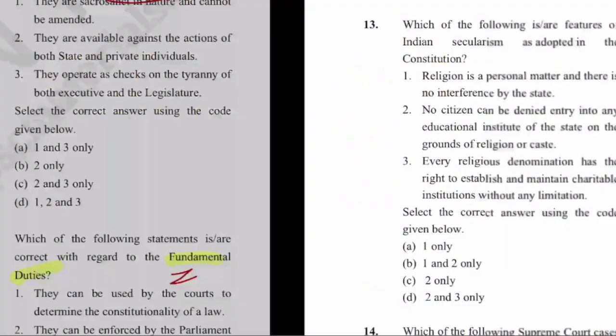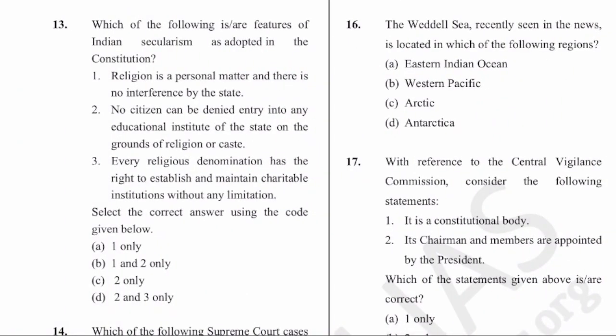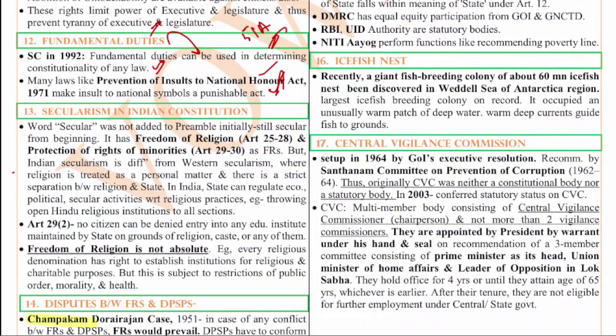The 13th question is on Indian secularism. Articles 25 to 28 talk about freedom of religion. Protection of minorities is talked about in Articles 29 and 30. The word 'secular' was added to the constitution by the 42nd Constitutional Amendment Act, and today it is even in the preamble. The freedom of religion is not absolute - every religious denomination has the right to establish institutions for their religious benefit and charitable purposes, but it is subject to reasonable restrictions like all other rights.